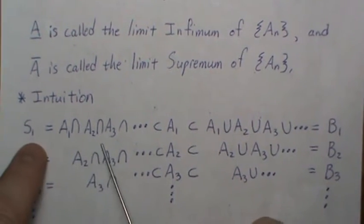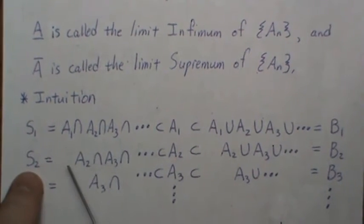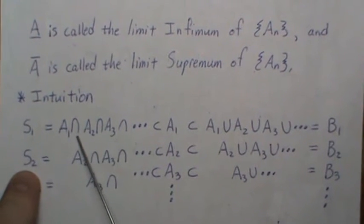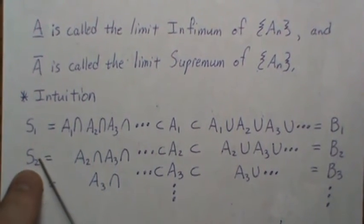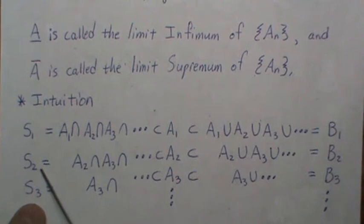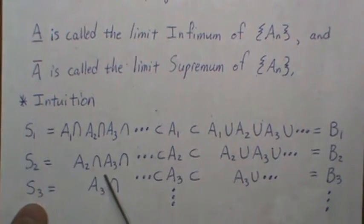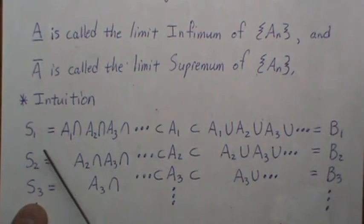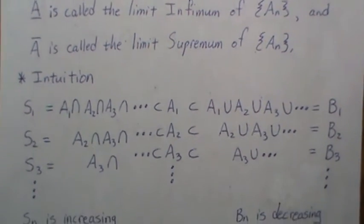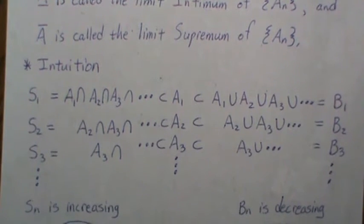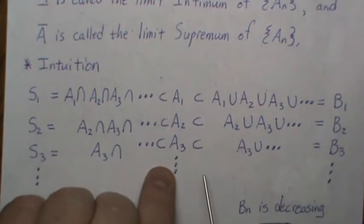For the S sequence: when you intersect an additional set it can only get smaller, so S_1 has fewer elements than S_2 — we've removed one set from the intersection. Going from S_1 to S_2 we got a little bigger, and the same holds from S_2 to S_3. In general, S_1, S_2, S_3 is an increasing sequence. So B_n is decreasing, S_n is increasing, and at each n we have S_n ⊆ A_n ⊆ B_n.